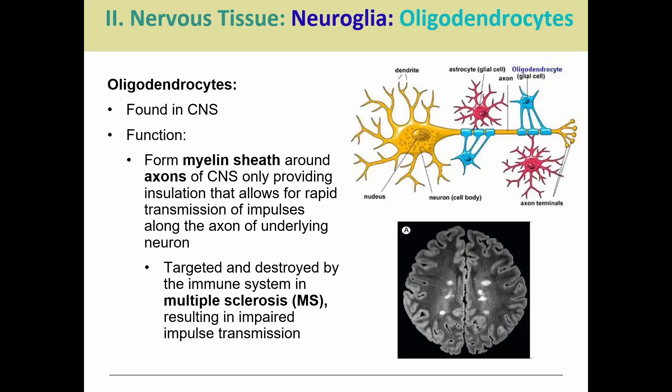Oligodendrocytes are going to help form the myelin sheath to provide insulation around the axons of the neurons. This helps speed along the transmission of impulses. When the myelin sheath gets destroyed, we have a problem with impulse transmission. This is a hallmark sign of multiple sclerosis, or MS, where the immune system is destroying the myelin sheath or the oligodendrocytes are being destroyed, so they can't produce or maintain that myelin sheath. A person with MS would have all sorts of issues depending on which part of the brain is impacted — issues with speaking, walking, and things like that. Each case can be a little different depending on where those lesions are found.